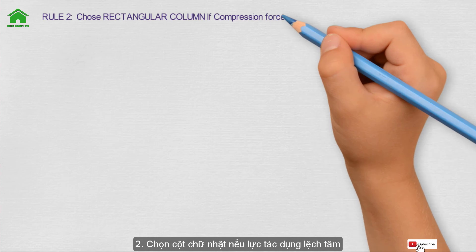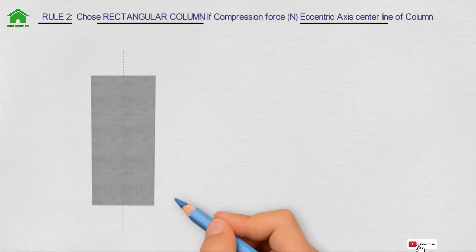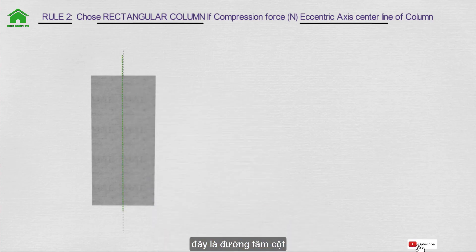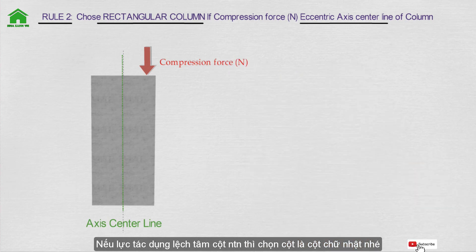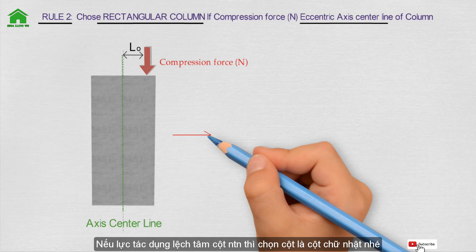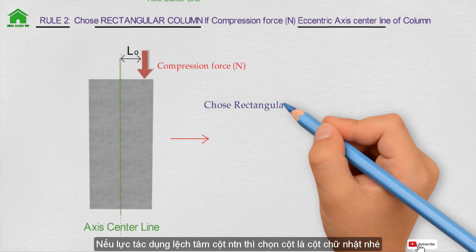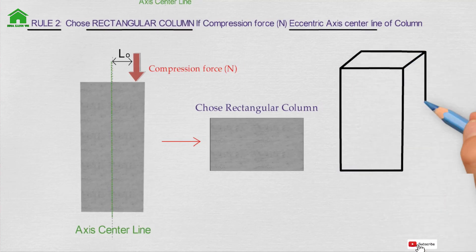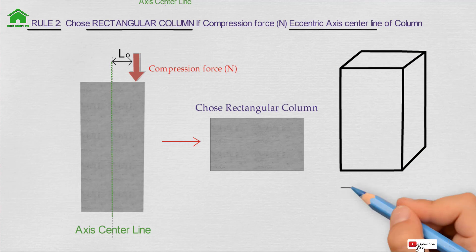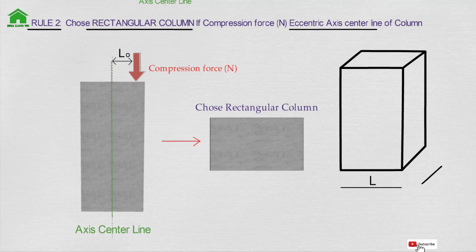Rule number two: use a rectangular column when the compressive force is not at the axis center line of the column section. Here is the axis center line, and here is the compressive force. The force N is not right at the axis center line, so we choose a rectangular column, where the length is greater than the width.